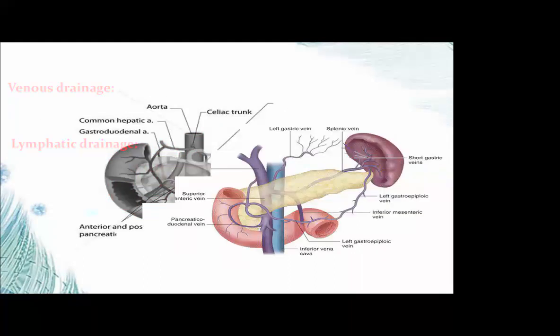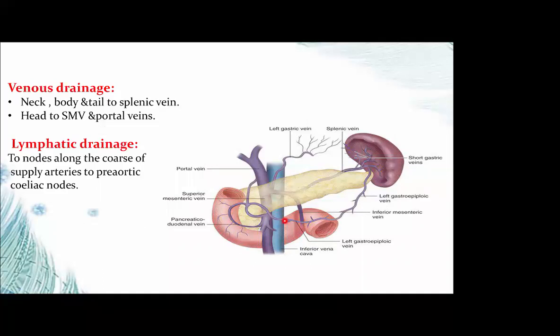Venous drainage: the neck, body, and tail drain to the splenic vein. The head drains to the superior mesenteric vein. Lymphatic drainage goes to nodes along the course of the splenic artery.